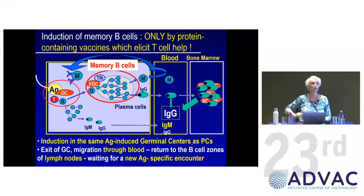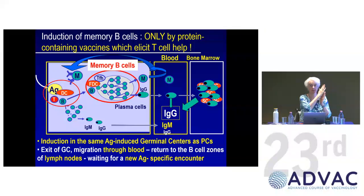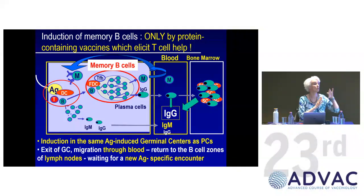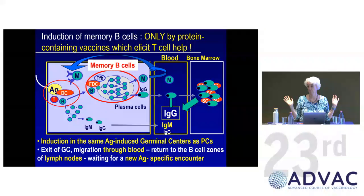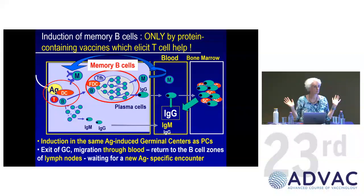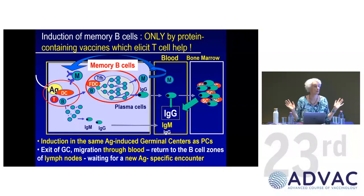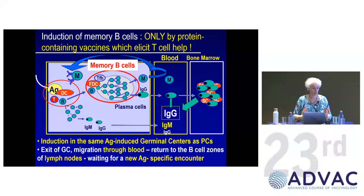Memory B cells migrate to the blood and return to the lymph node at the T-B cell border, where dendritic cells, B cells, and antigens will eventually arrive. They sit there doing nothing — enjoying life, protecting no one. Having a resting memory B cell is of no use to anyone, but it's the first step: they go there and wait for a new encounter to become activated.